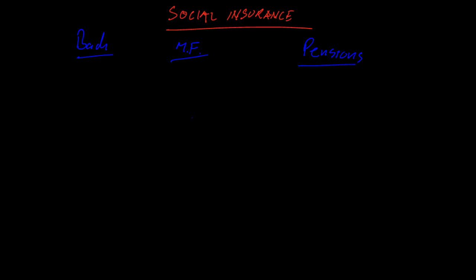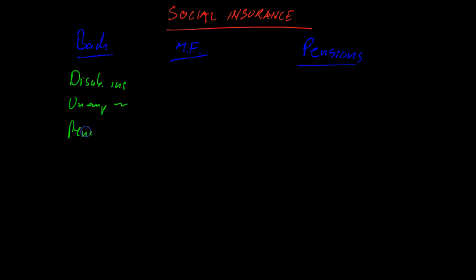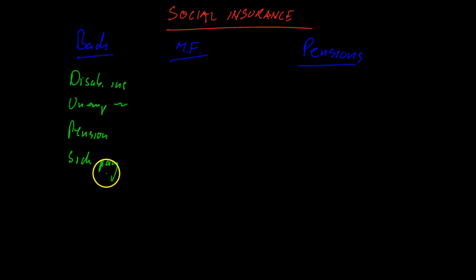So what are we talking about here? We're talking about things like disability insurance, unemployment insurance, pensions, and sick pay. A lot of things go into social insurance and it makes up a big part of the government budget in many different countries. Some people would also include health insurance, but that's a different topic. It's very important and a big factor in the lives of many people.